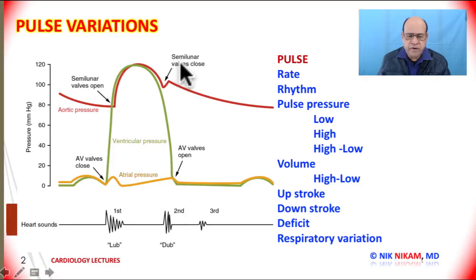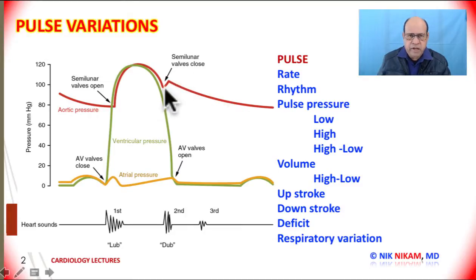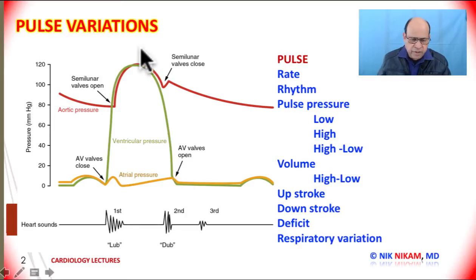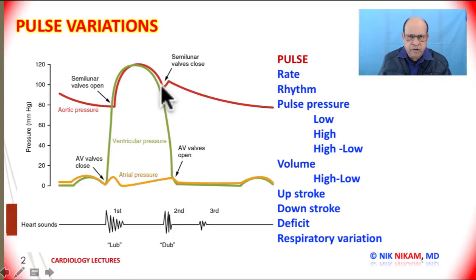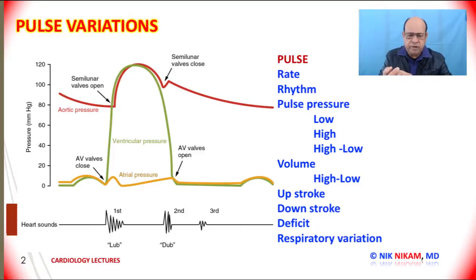The dicrotic notch represents the closing of the semilunar valves — namely the aortic and pulmonic valves. Then gradually the aortic pressure comes down as the ventricular pressure decreases with isometric relaxation. This pulse wave is transmitted to the rest of the body, and that's how we feel the pulse in the neck by palpating the carotids and at the radial pulse.